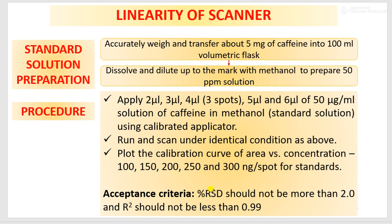What is the acceptance criteria? Percentage RSD should not be more than 2%. For the 4 µL application applied 3 times, for those 3 values you have to find out percentage RSD, and that value should not be more than 2%. The rest of the values you have to utilize for calculation of R-squared, and R-squared should not be less than 0.99 — meaning the graph should be linear, with linearity between concentration and area.